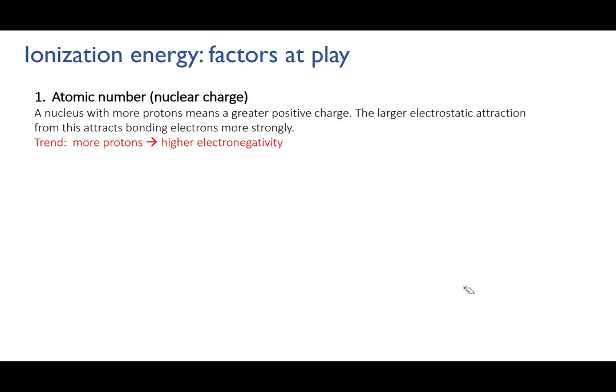Second, the distance from the nucleus. When large atoms form bonds, the bonding electrons that sit between them are far from the nucleus. They occupy a similar region in space to the valence shell.